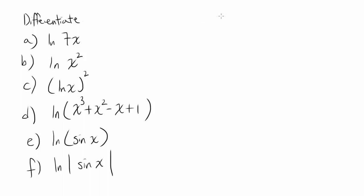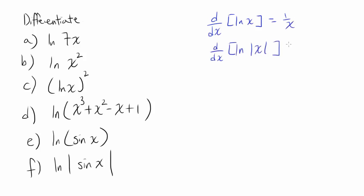In the last video, using the definition of the natural log function and some simple case work, we showed the derivative of natural log of x is equal to 1 over x, and the derivative of natural log of absolute value of x is also 1 over x. So using this, let's try to differentiate the following functions.